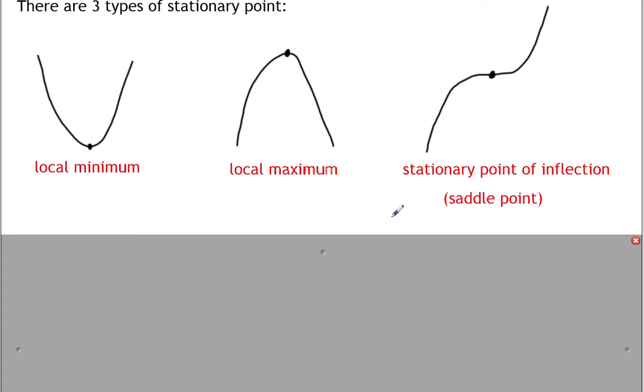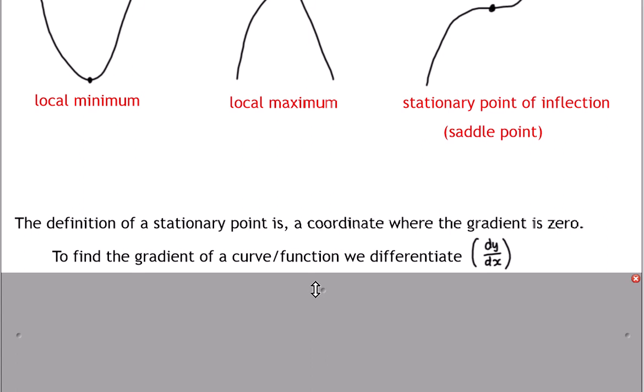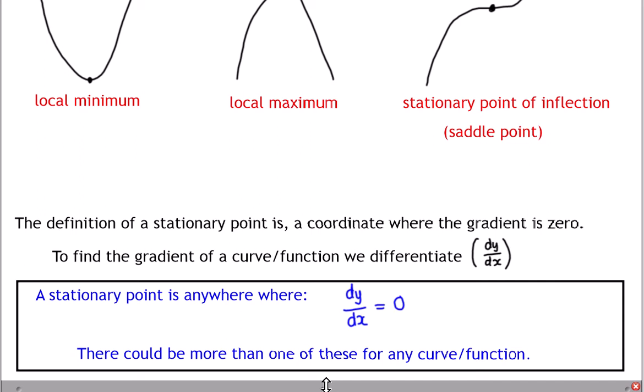So how do you find a stationary point? The definition of a stationary point is anywhere where the gradient is zero and the graph is flat. When we were differentiating, we said that the purpose of differentiation is to find the gradient at any given point of a graph. So really, if the gradient needs to be zero and differentiating gives you the gradient, then to find the stationary point it's anywhere where dy/dx equals zero. There could be more than one of these on any curve — sometimes one, sometimes two, as many as three or four depending on how complex the function is. To find a stationary point, you differentiate, get dy/dx, and then find places where dy/dx equals zero.